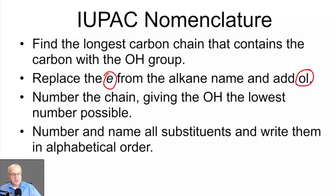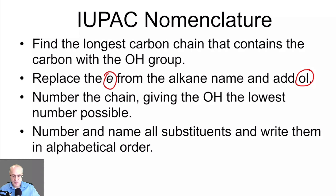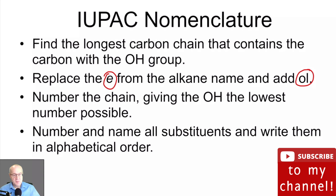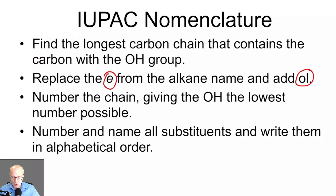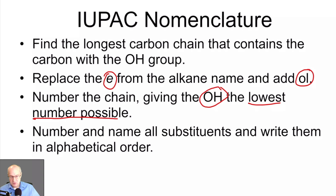Alkanes end in the suffix -A-N-E; those are hydrocarbons. Alkenes, say propene, end in the suffix -E-N-E. So the suffix is telling you the class of compound. You number the chain giving the OH the lowest possible number, then number and name all substituents just like before, and write them in alphabetical order. Alphabetical order is what matters, not the number.